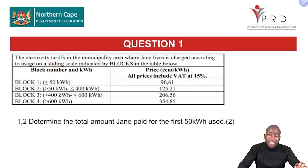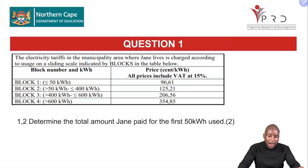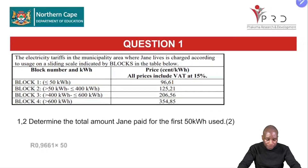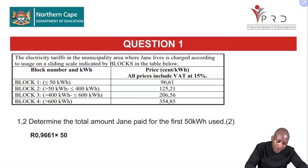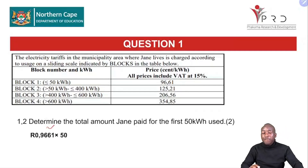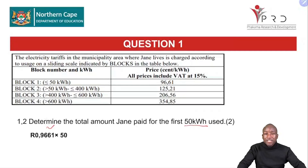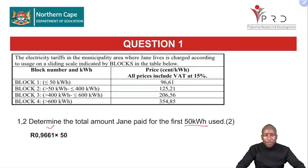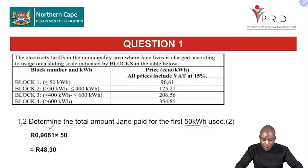For Question 1.2, determine the total amount Jane paid for the first 50 kilowatt hours used. Remember that 0.9661 rands is only for 1 kilowatt hour. In this case we are given 50 kilowatt hours, so we apply that rate by multiplying by 50. We get 48.30 rands — that's the total amount Jane paid for the first 50 kilowatt hours. I'm sure you'll be able to answer such questions when you meet them in your paper.